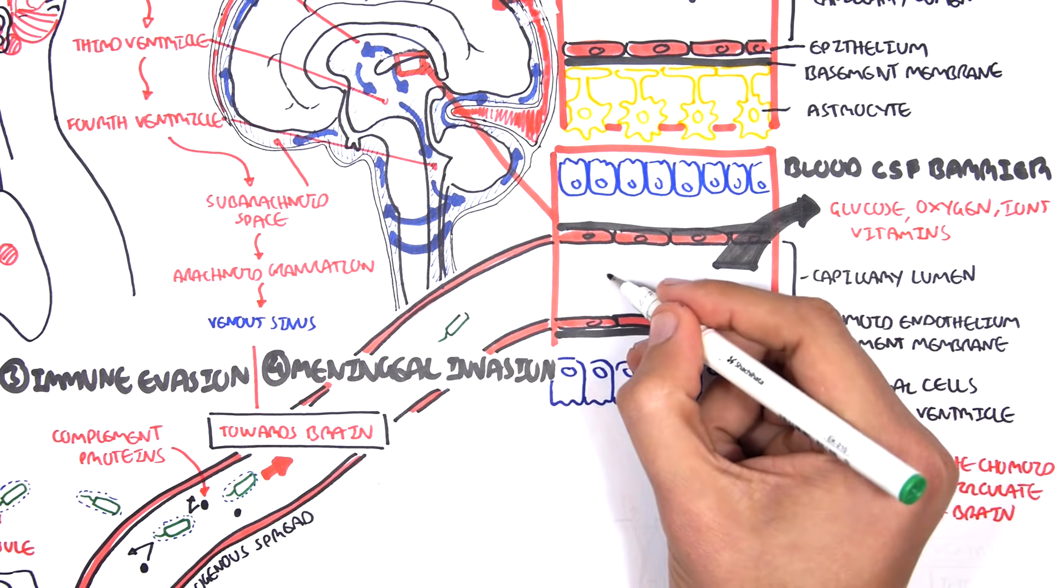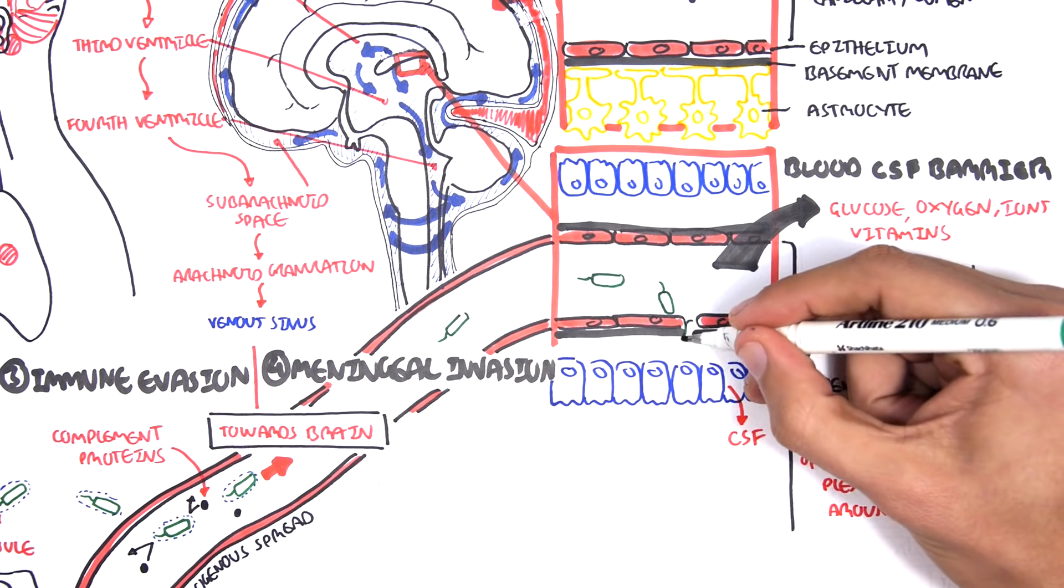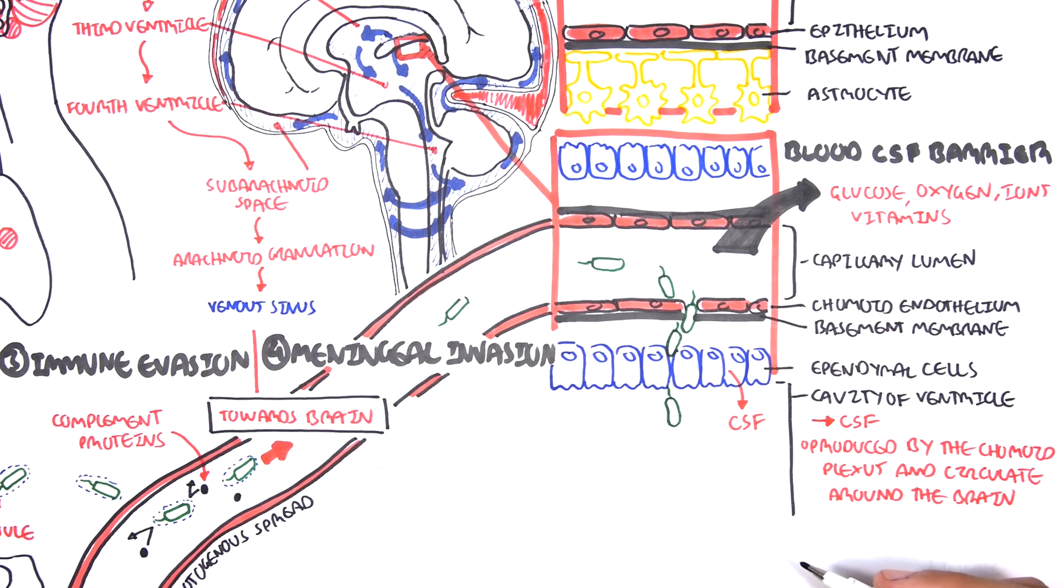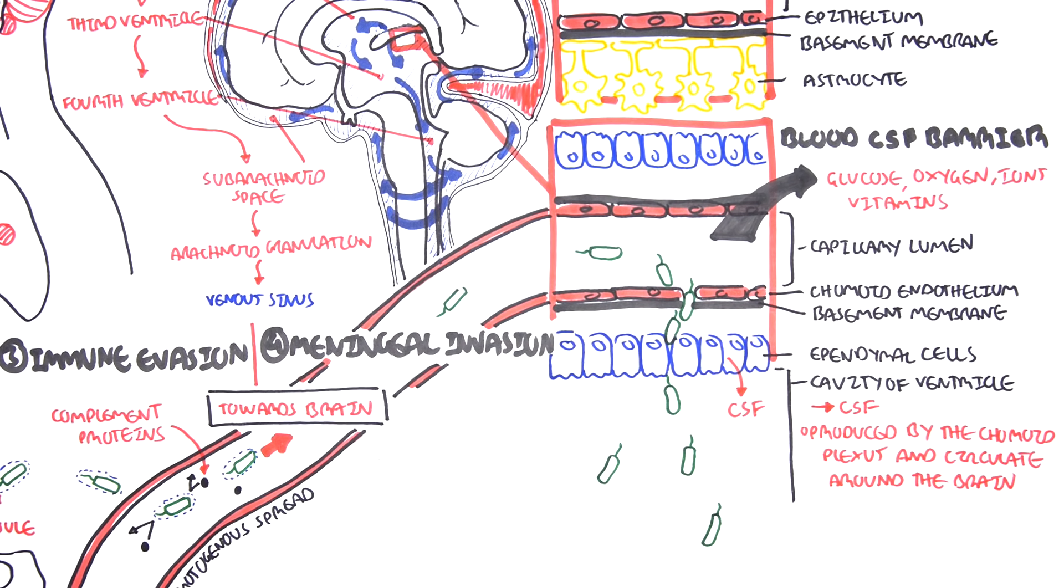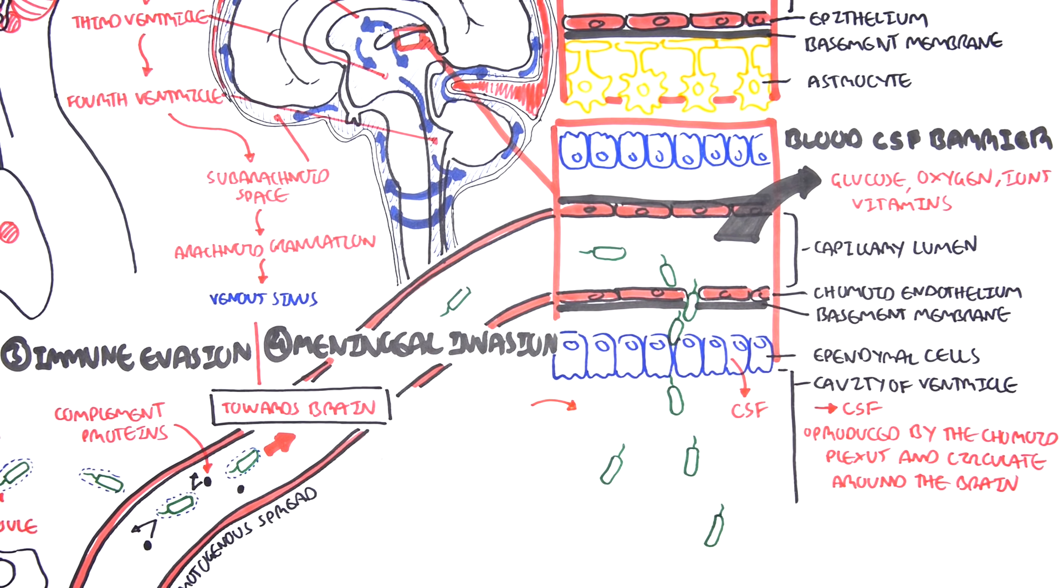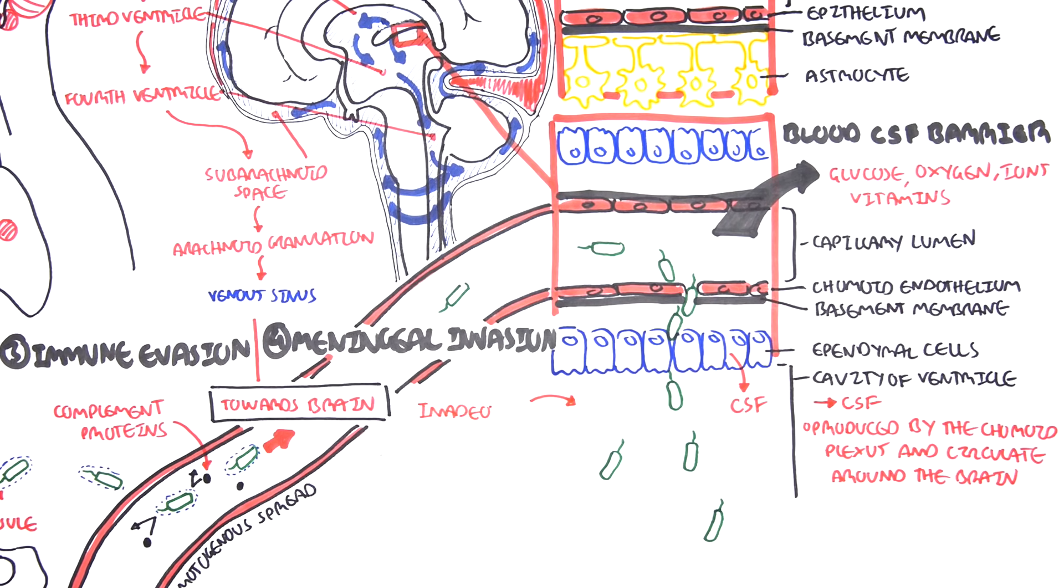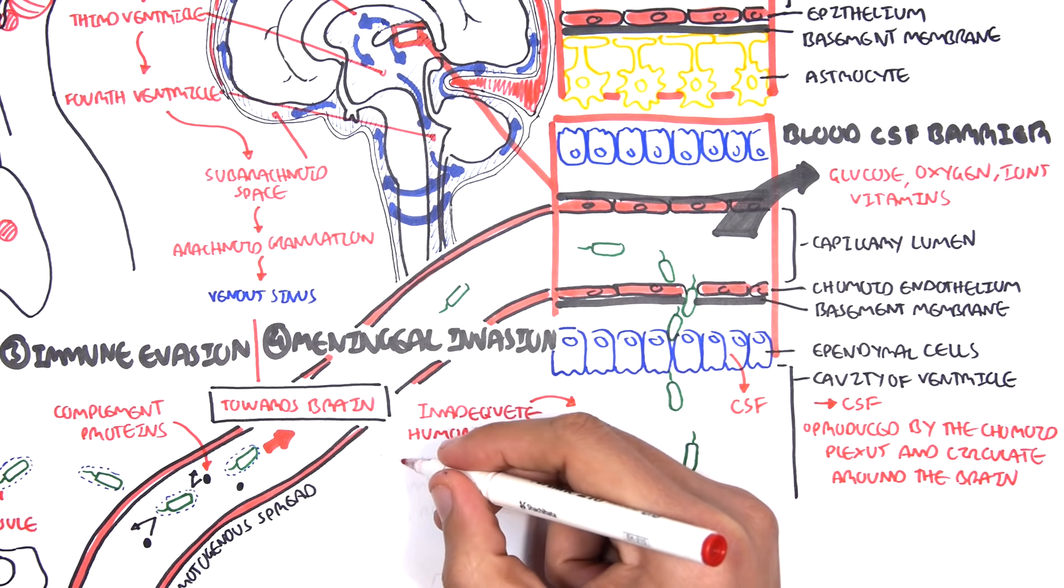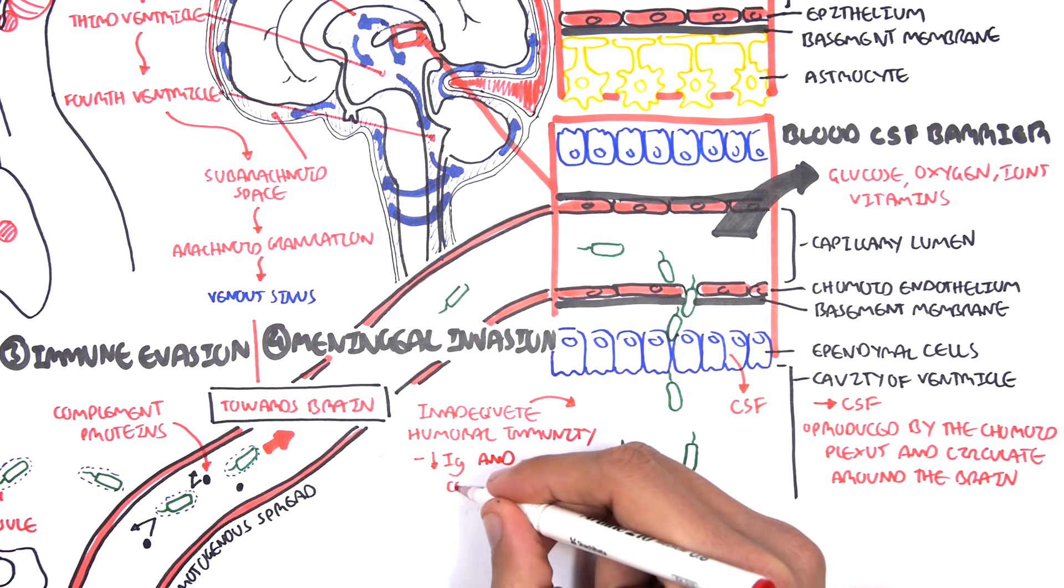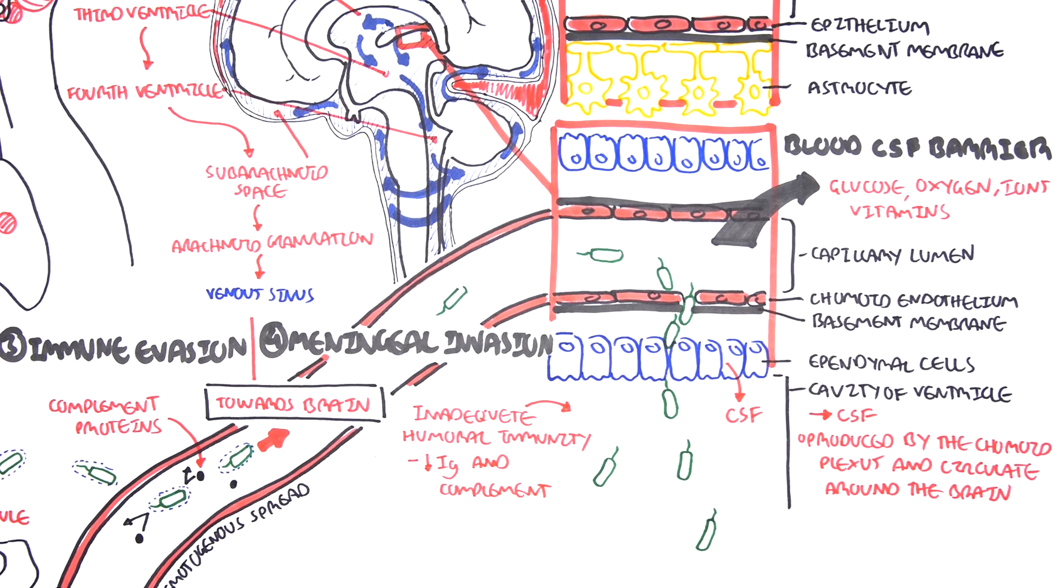Sadly though, bacteria can also get here. Bacteria can invade the meninges through this mechanism. What is very interesting here is that cerebrospinal fluid is so sterile, there is inadequate humoral immunity. There is low immunoglobulins here, and there's low complement proteins. And so you can imagine the hematogenous spread, the bacteria can enter the ventricles and then enter the cerebrospinal fluid.